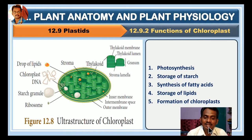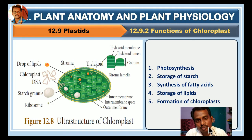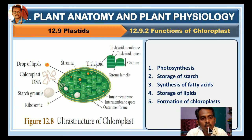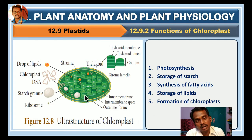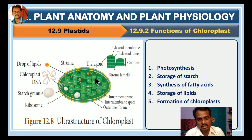Welcome back students. Last class we discussed the ultrastructure of the chloroplast — what is grana, what is thylakoid, what is stroma lamella, and what are the cellular organelles that are present inside the stroma of the chloroplast. These are the structures we discussed last class.